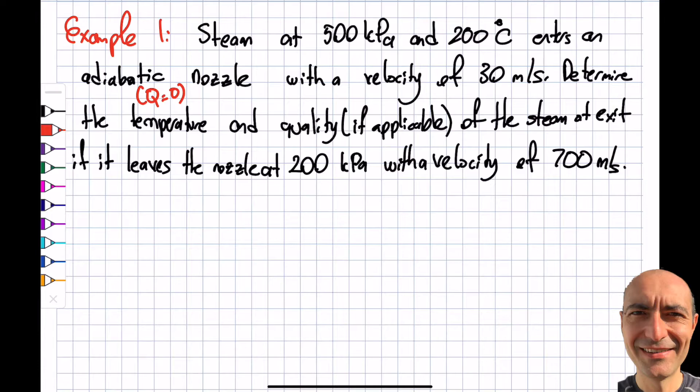And the goal is to increase the velocity. Velocity is 30 meters per second. Determine the temperature and the quality, obviously if applicable, it's not applicable everywhere, only in the steam dome. Of the steam at exit, if it leaves the nozzle at 200 kilopascal. So you see what happened in nozzle, as I mentioned previously, the pressure reduced, velocity has significant increase.